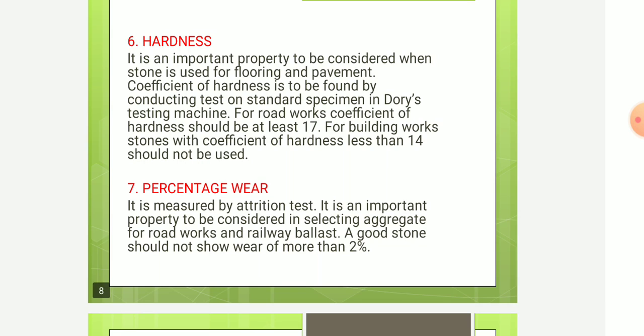Next is hardness. It is an important property to be considered when stone is used for flooring and pavement. The coefficient of hardness is found by conducting tests on a standard specimen in Dory's testing machine. For road work, the coefficient of hardness should be at least 17. For building works, stones with a coefficient of hardness less than 14 should not be used.